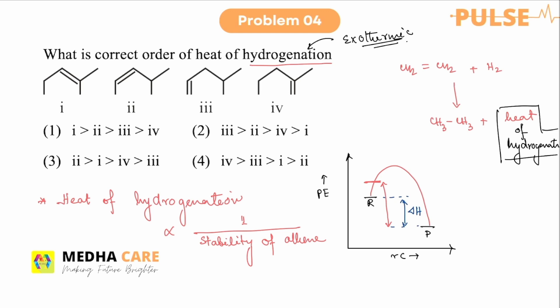The stability of the alkene can be determined by counting hyperconjugating structures. Here: structure one has three, structure two has eight, structure three has two, and structure four has five hyperconjugating structures. Structure three is the least stable, so it gives more heat on hydrogenation. The order of heat of hydrogenation will be: three > two > four > one. This is the correct answer.